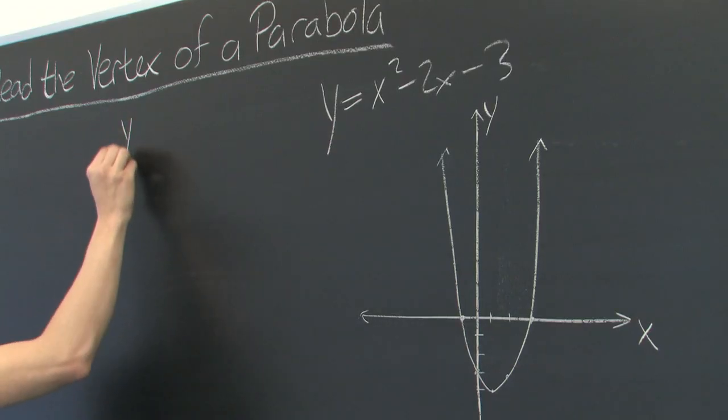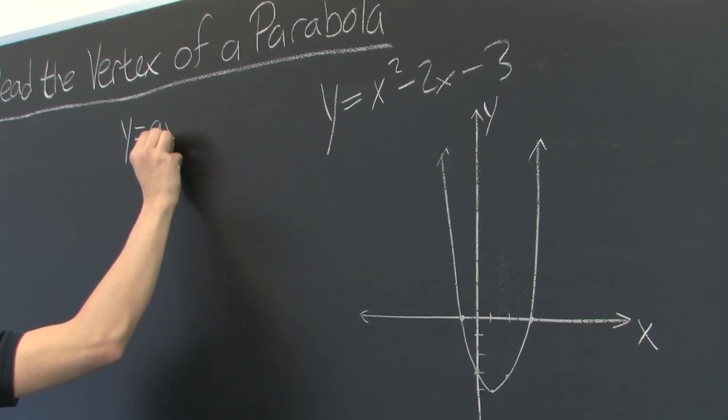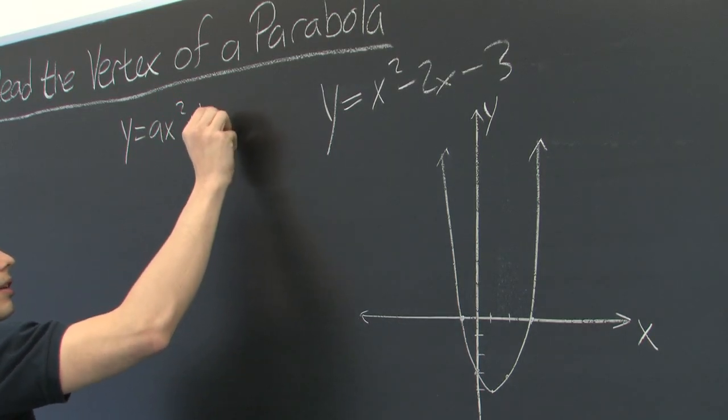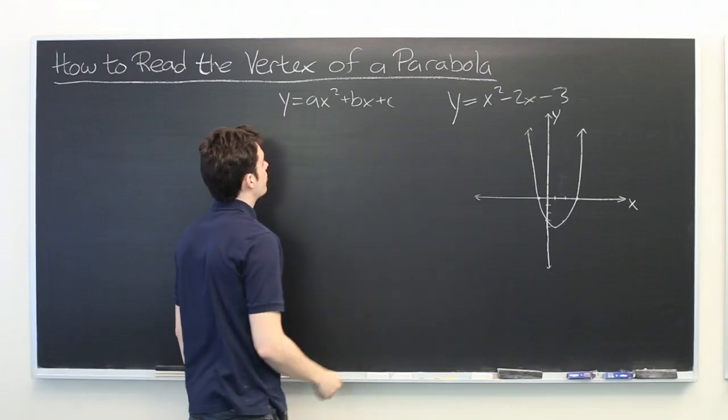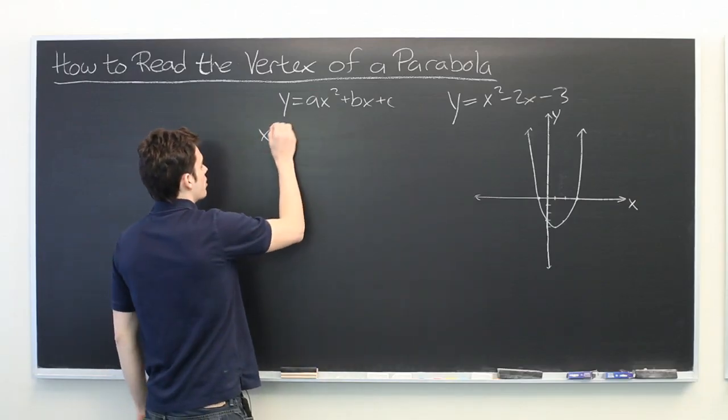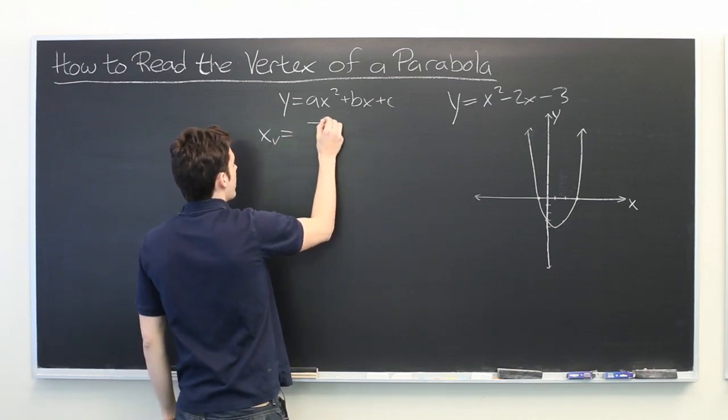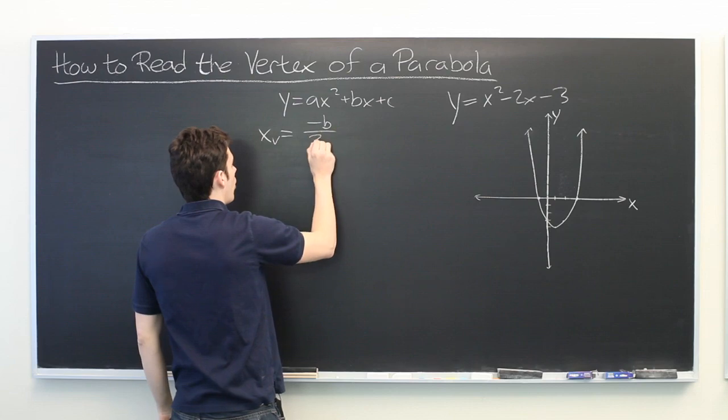Well, when you have a parabola of the form y equals ax squared plus bx plus c, as we do, the x-coordinate of the vertex, which we'll call xv, is given by negative b over 2a.